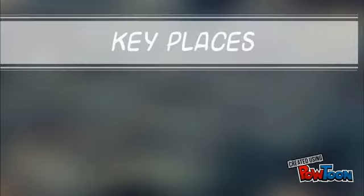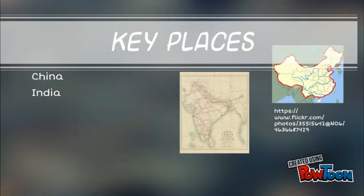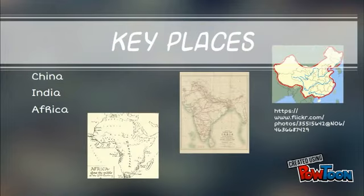In the imperialism part two video, we're going to look at some of the specific places being imperialized in the 19th century — particularly China, India, and Africa — and also take note of what's going on with the European nations themselves.